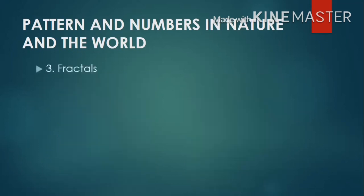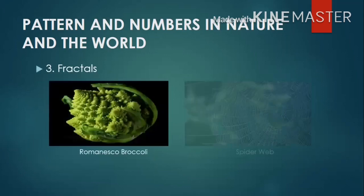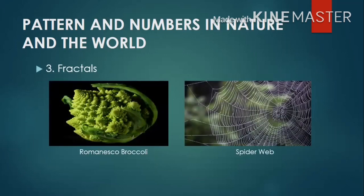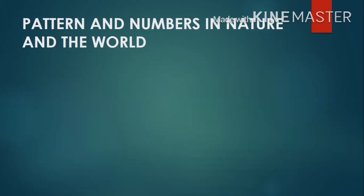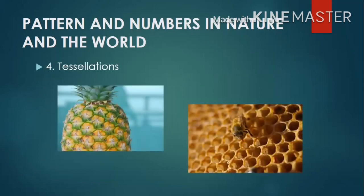Third is fractal pattern. Fractal patterns are built from simple repeated shapes that are reduced in size when repeated. The two best examples are Romanesco broccoli and the spider web. And last but not the least, tessellations. Tessellations are created with identical shapes which fit together with no gaps. We have the pineapple and the beehive as examples.